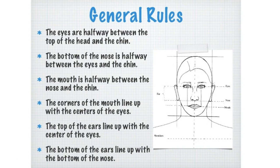The mouth is halfway between the nose and the chin. You just keep breaking things in half. From the bottom of the nose to the chin you have your mouth. The corners of the mouth line up with the centers of your eyes. Figure out where your eyes are going to go.